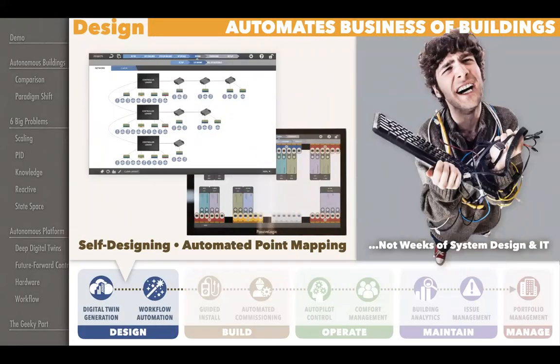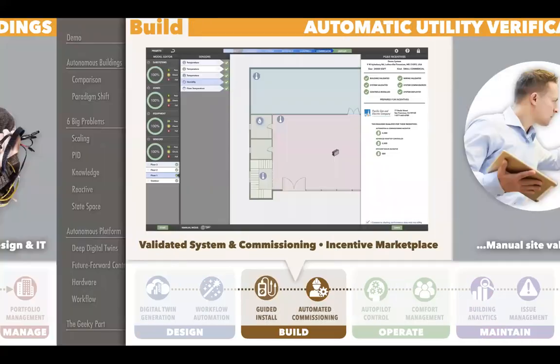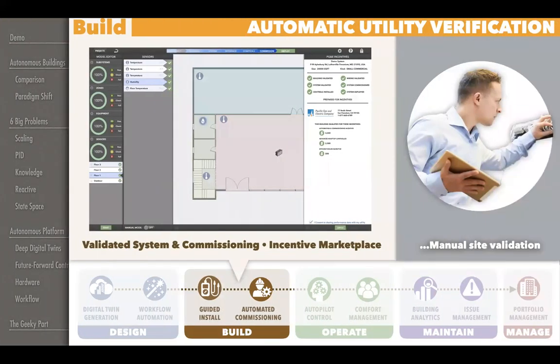Once you've done the drawing of the building and the systems, it actually says, 'I know how to design a control system for you. Would you like me to do that?' And it will design its own control system, point map it all, and then give you this what-you-see-is-what-you-get wiring interface that gives you live interaction. This is replacing what has been days or weeks of system design, IT work, and then going out to the marketplace working with endpoint distributors to acquire all this stuff.